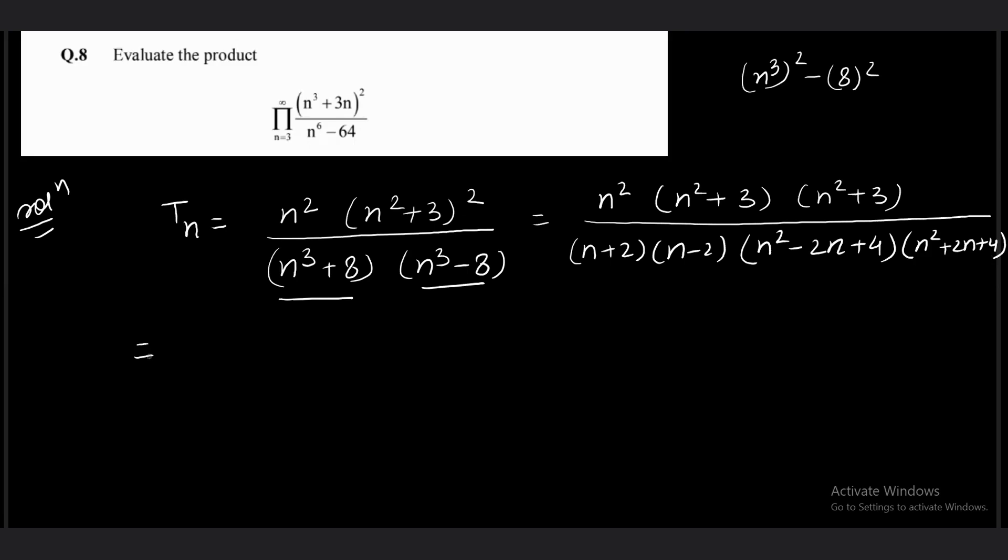What you have to do? In these types of questions, first you have to write Tₙ properly. No further reduction in the terms is possible. Next step is you split all these factors. Write it as a product of factors, combining the numerator and denominator.